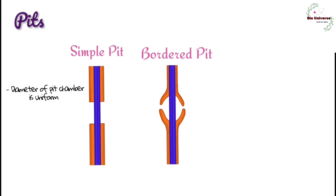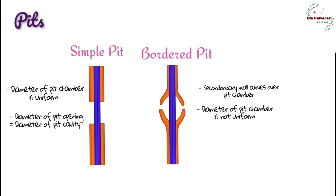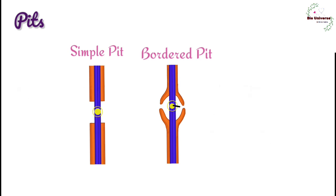In simple pits, diameter of pit chamber is uniform and diameter of the pit opening is equal to diameter of pit cavity. In bordered pits, the secondary wall overcurves the pit chamber due to presence of border, diameter of the pit chamber is not uniform and diameter of the pit opening and pit cavity is not equal. Torus is a disk-shaped thickening that occurs in pit membrane. It prevents rupturing of pit membrane when unequal pressure is present on its two sides. Margo is the covering of torus.